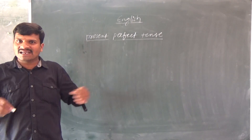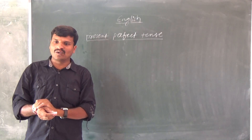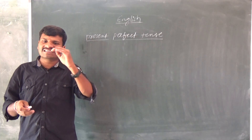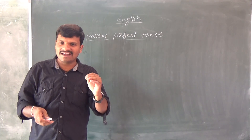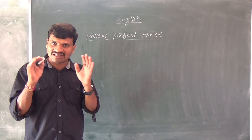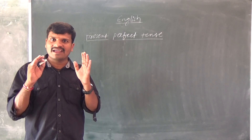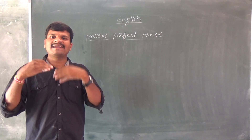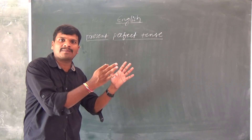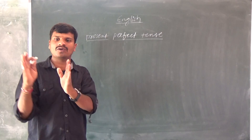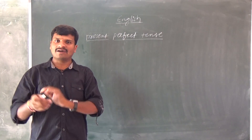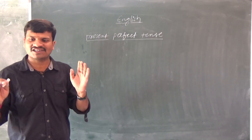The present perfect tense is used to denote an action which was completed in the immediate past. That means just-now-completed actions all belong to present perfect tense.